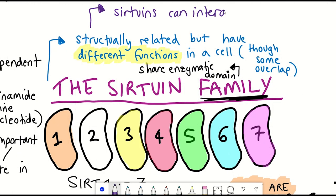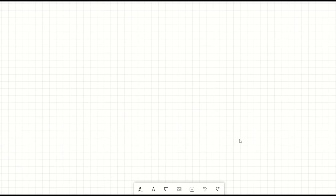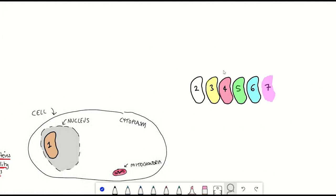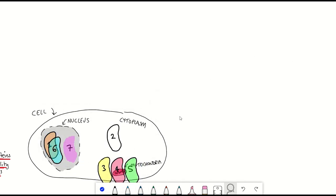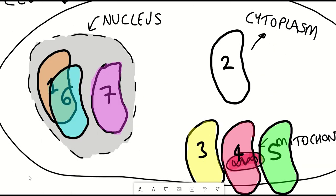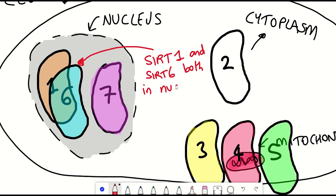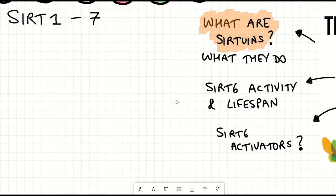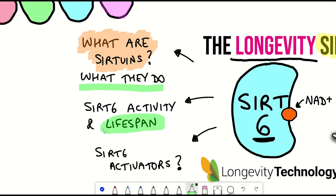This is where the different sirtuins vary, because due to their different structural differences they interact with different proteins, and this is also influenced by their cellular localization — they'll only be able to interact with proteins localized in the same area. Out of the seven sirtuins, Sirtuin 1, 6, and 7 are primarily found within the nucleus of the cell where the DNA is found, whilst Sirtuin 3, 4, and 5 are found in the mitochondria, and Sirtuin 2 is mainly in the cytoplasm. Even though Sirtuin 1 and Sirtuin 6 are both in the nucleus, they don't interfere with each other because they have different binding affinities to different proteins.